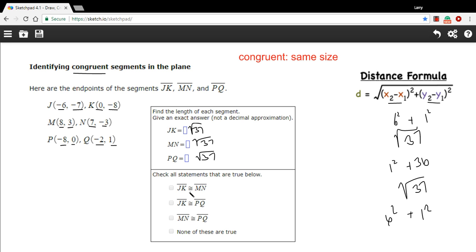So all three of these segments are the same length, which means all three are congruent. And this little symbol down here - an equal sign with a little wavy thing on top - that means congruent. So JK is congruent to MN, JK is congruent to PQ, MN is congruent to PQ. All of those are congruent.